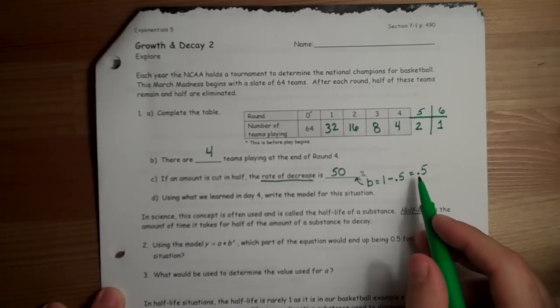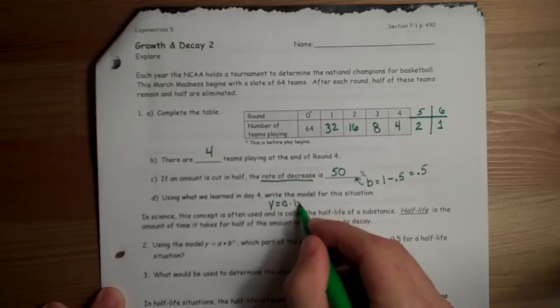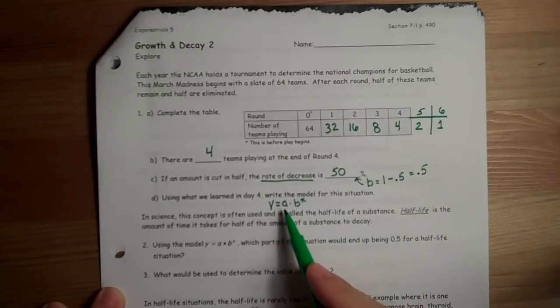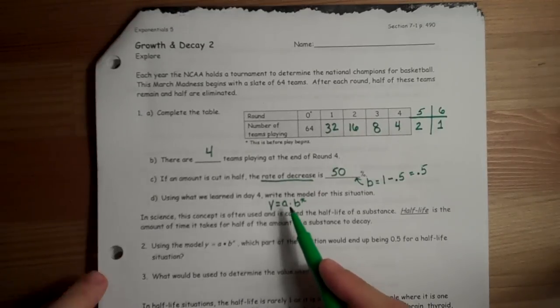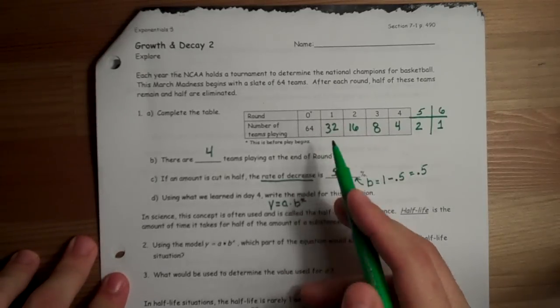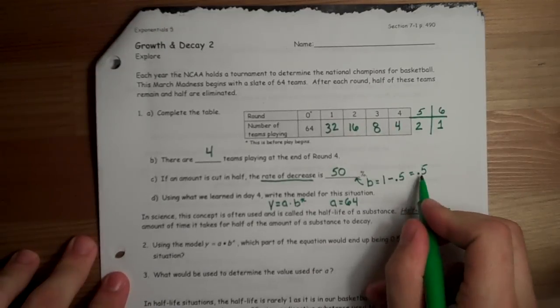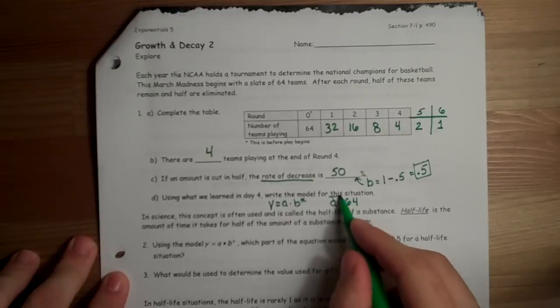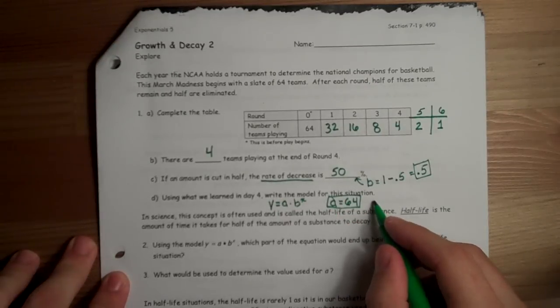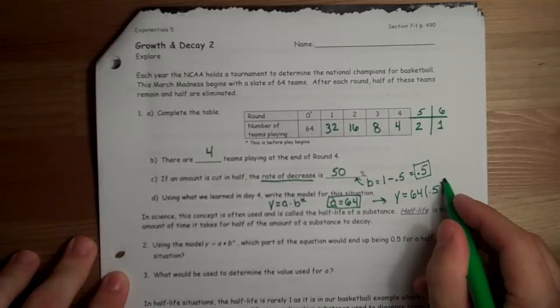Now that we've got our base, we can get started here on writing our equation for this situation. Remember, our equation for all exponential models looks like y equals a times b to the x. We've already got the b, we just need to remember what our a is. So just remember, a, we talk about graphically, that kind of goes together with our y-intercept, which is about our initial value. So in this particular problem, we started with 64 teams in the tournament. Our initial value, our a value, would be 64. So we've got our a, we've got our b of 0.5 up here. We can go ahead and write the equation, and we should see that we would have y equals 64 times 0.5 to the x power.